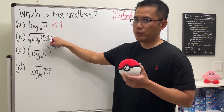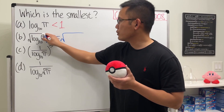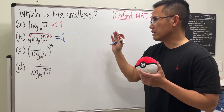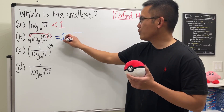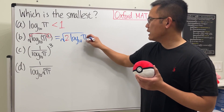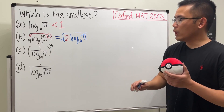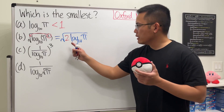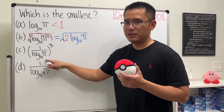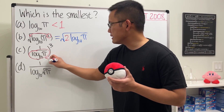We have a 2 here — we can bring the 2 to the front. This is equal to the square root, and again bring the 2 to the front. This is just a property of logarithms, not derivatives. So we have a 2 right here and then log base 10 of pi. This right here is much easier to handle because we know this is less than 1.